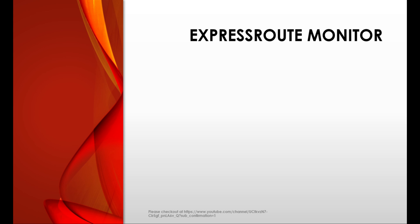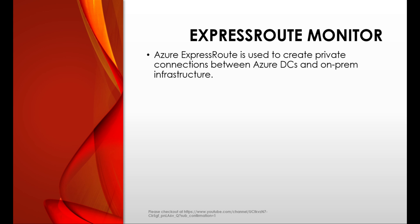Let's move to the next one — Azure Express Route Monitor. Azure Express Route is used to create private connections between Azure data centers and infrastructure on your premises or in a co-location environment. The advantage with Azure Express Route is that the connections don't go over the public internet and they offer more reliability, faster speeds, and lower latency than typical internet connections.